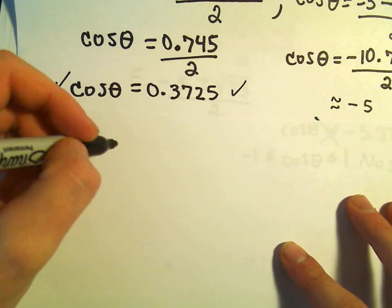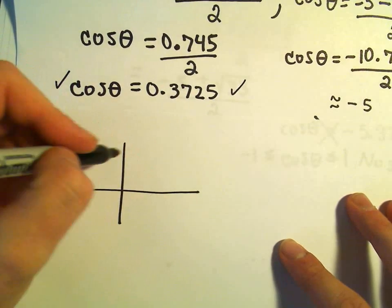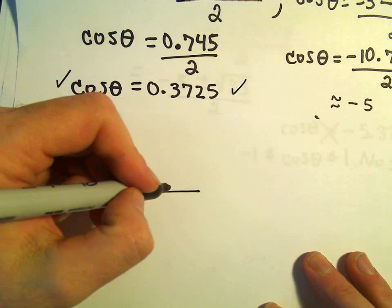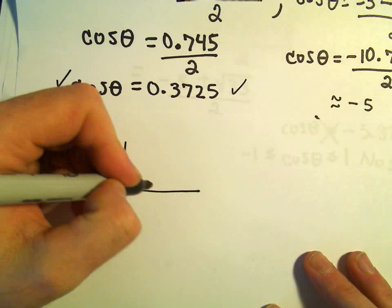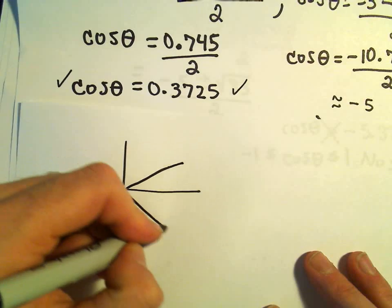We were looking for solutions between 0 and 2 pi, so one revolution around the unit circle. Recall that cosine is positive in the first quadrant and also in the fourth quadrant. So there's going to be two solutions that work here.